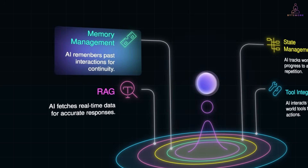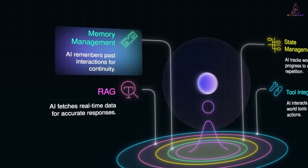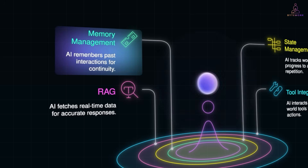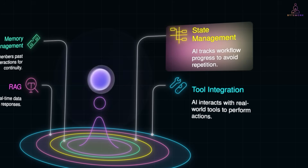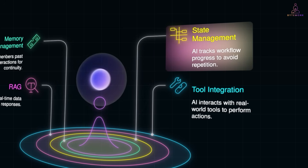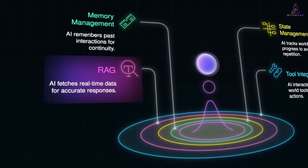Here are the key parts. AI can remember things short-term or long-term. Short-term means it remembers what you said in the last few turns. Long-term means it stores knowledge about you across sessions. Imagine a support bot that only remembers the ticket you filed today, but also knows about the issue you raised last month — that continuity makes it much more useful. State management is about keeping track of where you are in a workflow. For example, during a customer onboarding process, the AI should know you are on step three of identity verification, not restart from scratch every time.